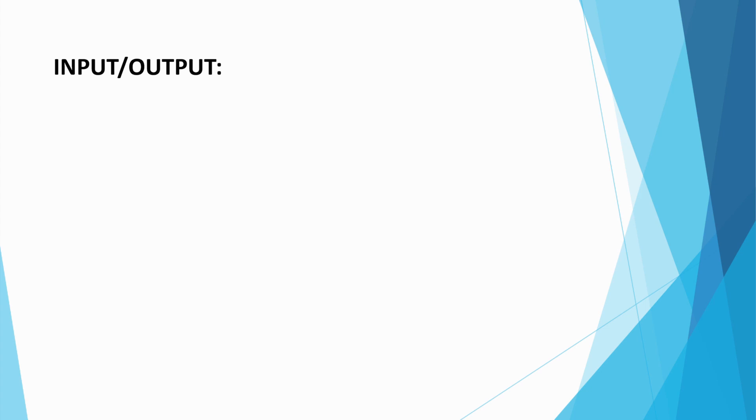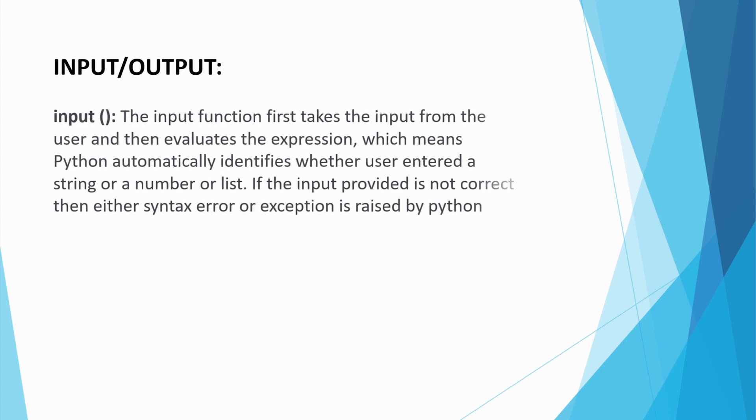Let us now look at the input and the output functions. The input function first takes the input from the user and then evaluates the expression, which means Python automatically identifies whether the user entered a string or a number or a list. If the input provided is not correct then either syntax error or exception is raised by Python.